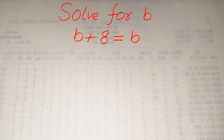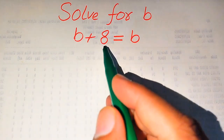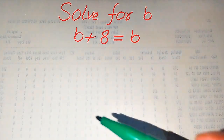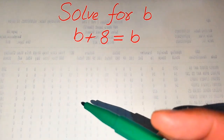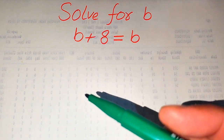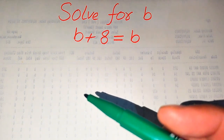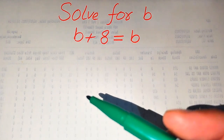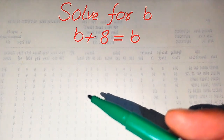Hello everyone. How to solve this problem for the values of B if we have √(B + 8) is equal to B, and we solve this problem for all the values of B. Here first we need to find all the roots of this equation, and at the end we will verify which of the roots are solutions and which of the roots are extraneous roots.